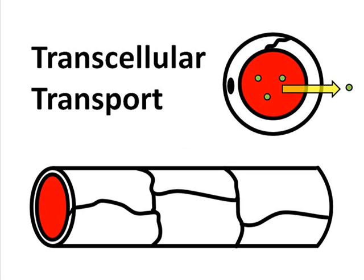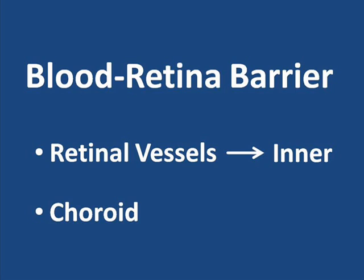Instead, for substances to gain access to the retinal tissue, they must pass through the endothelial cell in a process called transcellular transport. So the inner blood-retinal barrier consists not only of the tight junctions, but also of the endothelial cells and the surrounding structures that limit access to the retina.